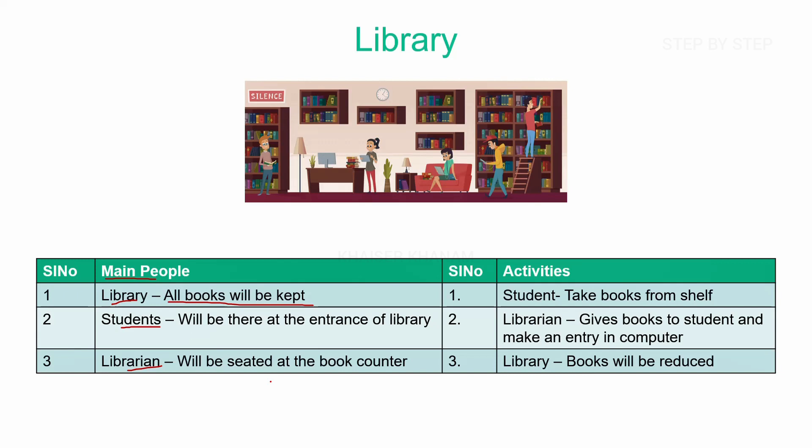Now what are the activities performed by the student? Student can take books from the shelf, student can read the book, student can borrow the book, and student can return the book if they have taken one previously. These are the activities a student can perform inside the library. Now what can the librarian do? If the student wants the book, the librarian can edit that entry in the computer and give the book to the student. If the student wants to return the book, they will edit the entry again, add that book in the computer, and keep the book back on the shelf.